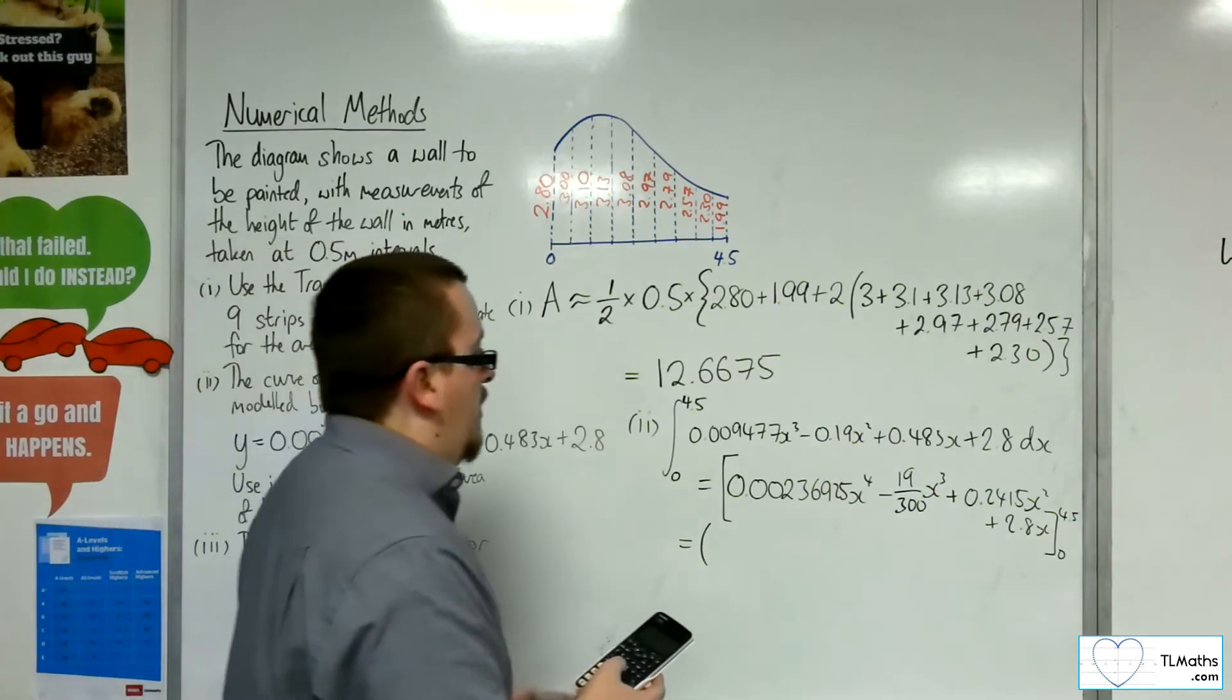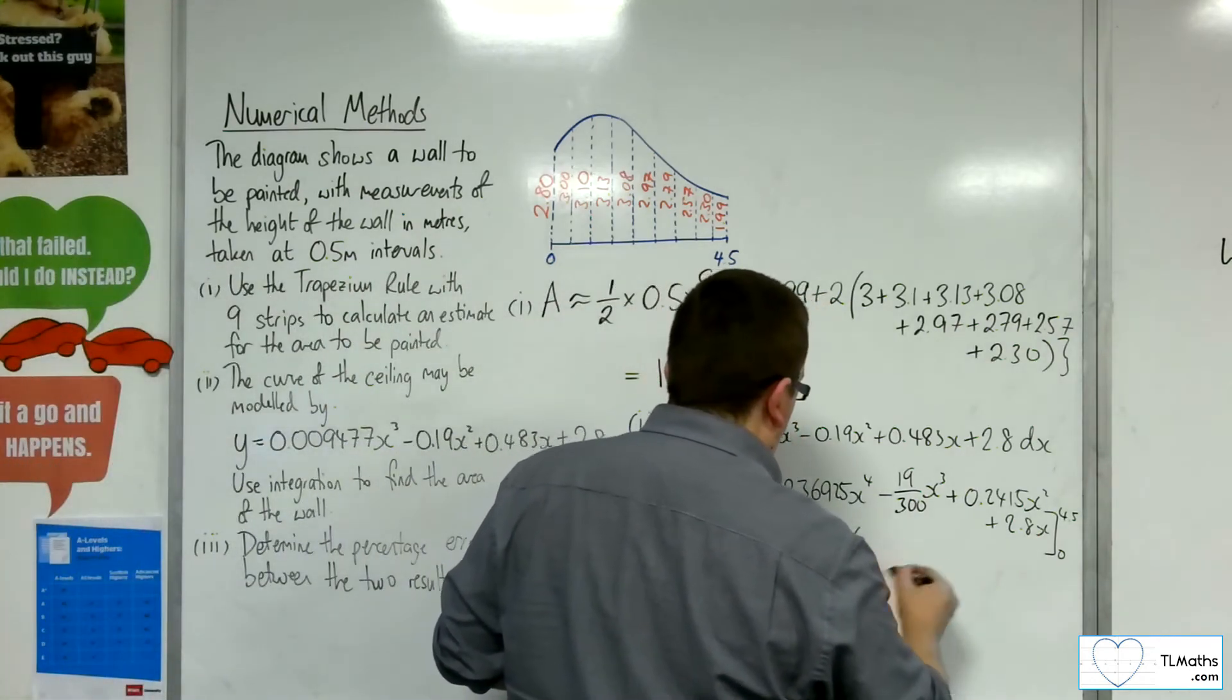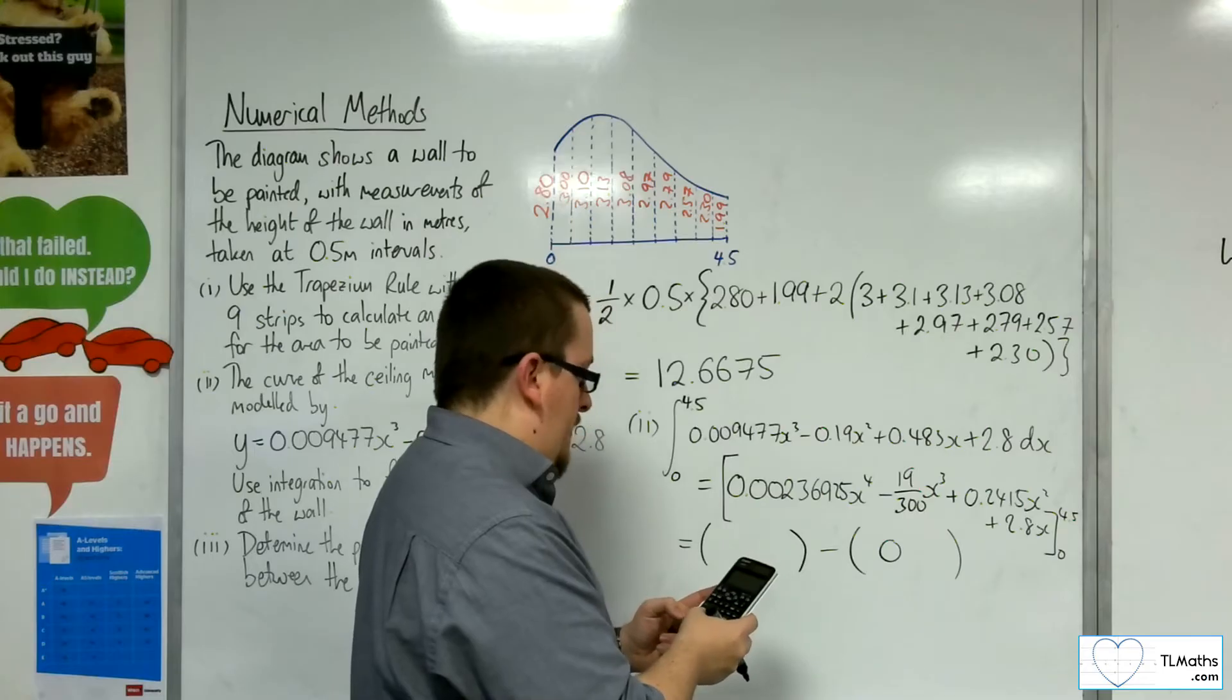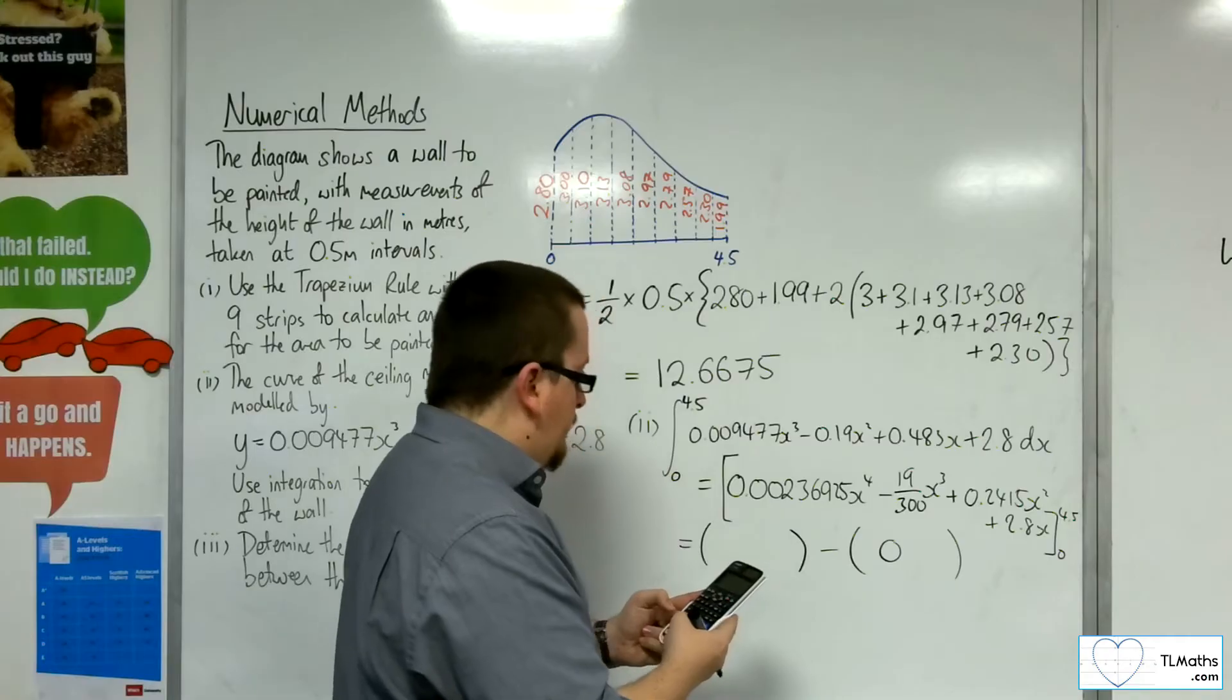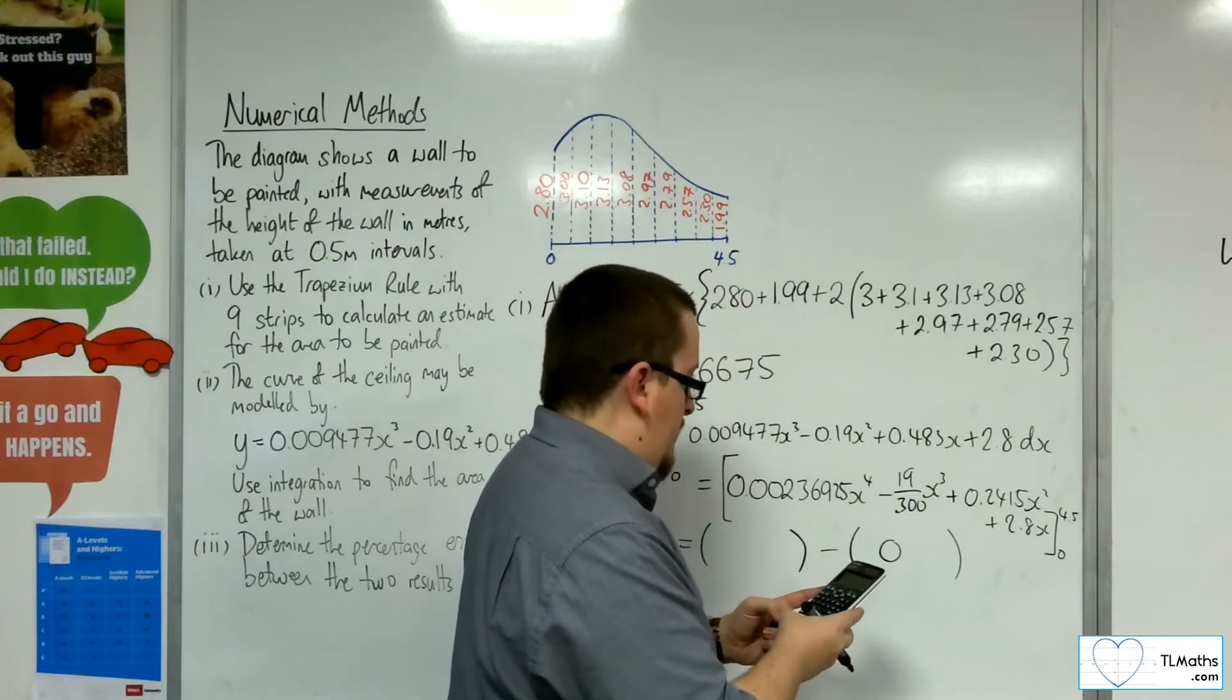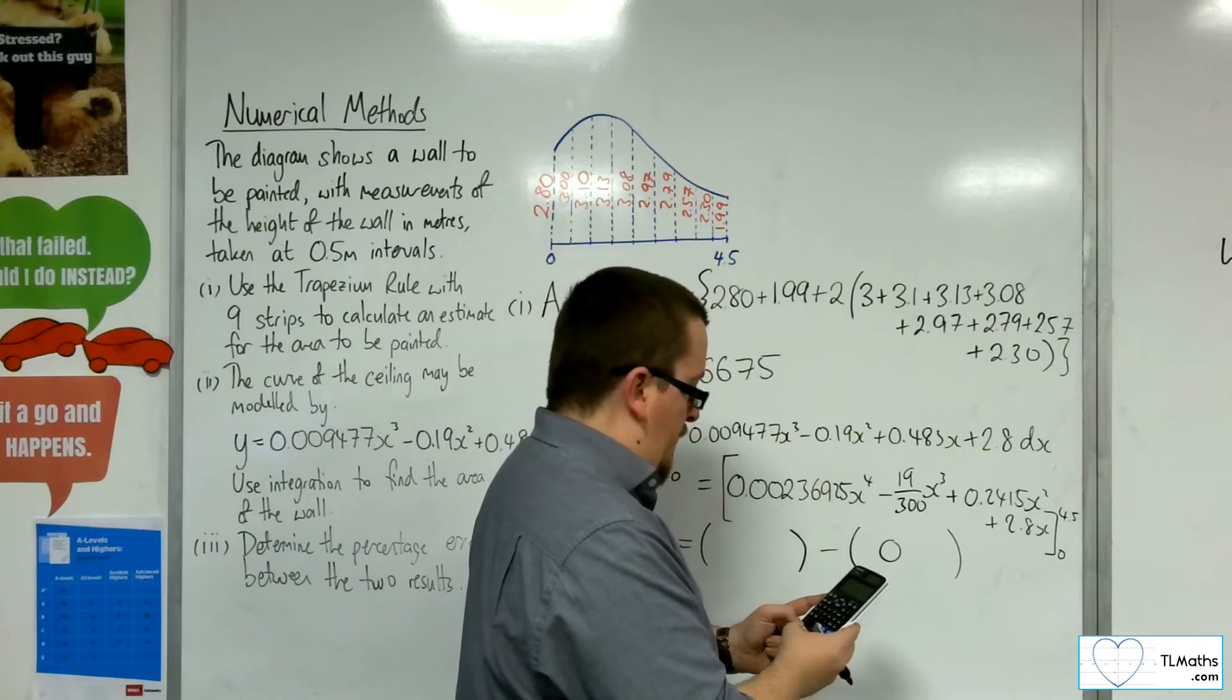I'm going to go straight into substituting in 4.5, otherwise it's going to be horrifically messy. Substituting in 0, I will just get 0. So 0.00236925 times 4.5 to the power of 4, take away 19 over 300 times 4.5 cubed, plus 0.2415 times 4.5 squared, plus 2.8 times 4.5.